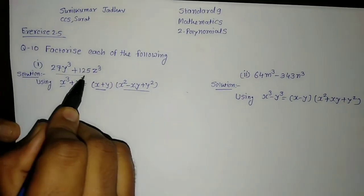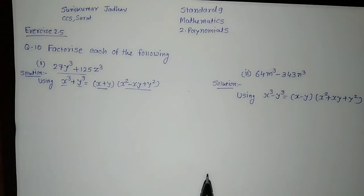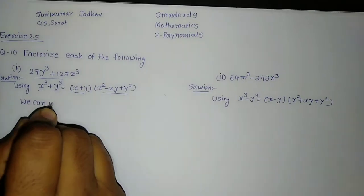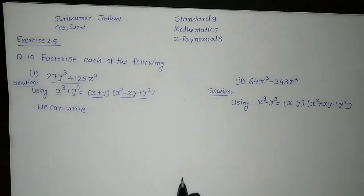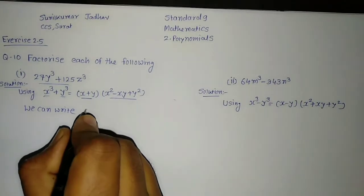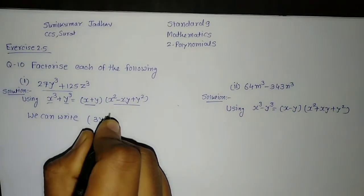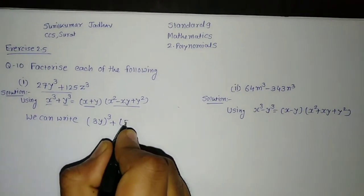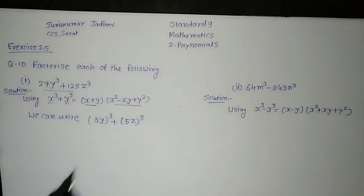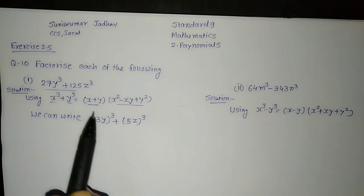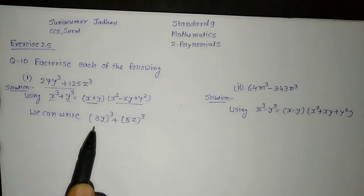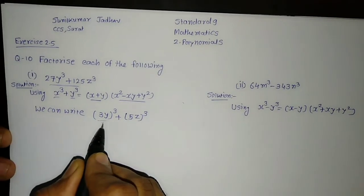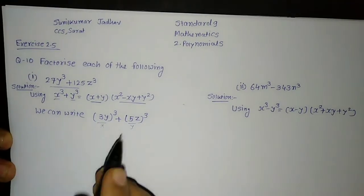Now we need to check whether we can convert this into the format of x cube plus y cube. We can write that 27y cube — 27 is a cube of 3 — so I can write 3y whole cube. Plus 125 is a cube of 5, so it is 5z whole cube. That means 27y cube plus 125z cube we should write as 3y cube plus 5z cube. Now we will use this formula, considering 3y as x and 5z as y.